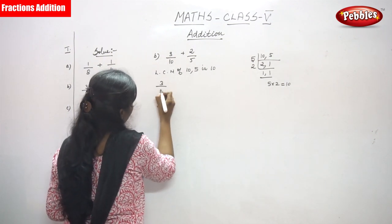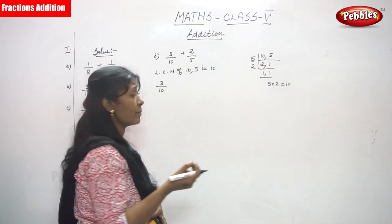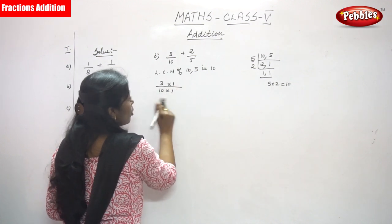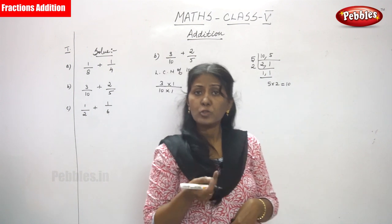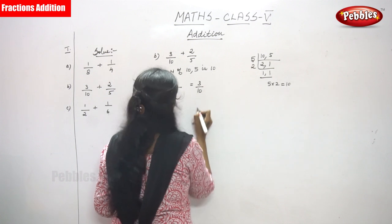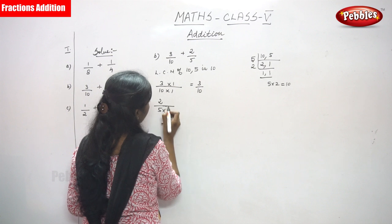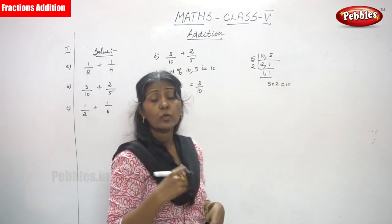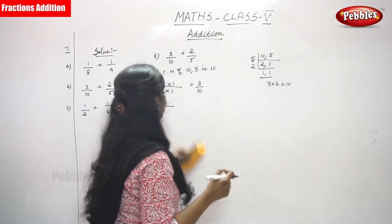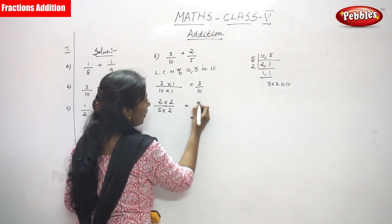For 3 by 10, I have to make this 10 as the common denominator. LCM is 10, so I multiply by 1. If the denominator is multiplied by 1, the numerator is also multiplied by 1, giving 3 by 10. For 2 by 5, I have to make this 5 as 10, so I multiply by 2. If the denominator multiplies by 2, the numerator also multiplies by 2, giving 4 by 10.